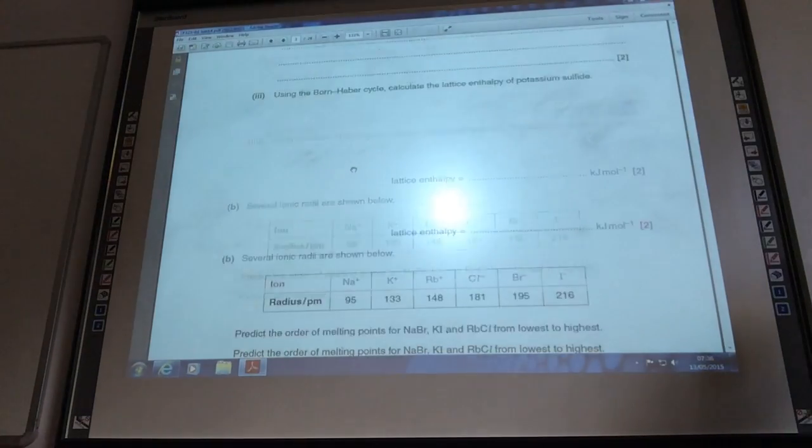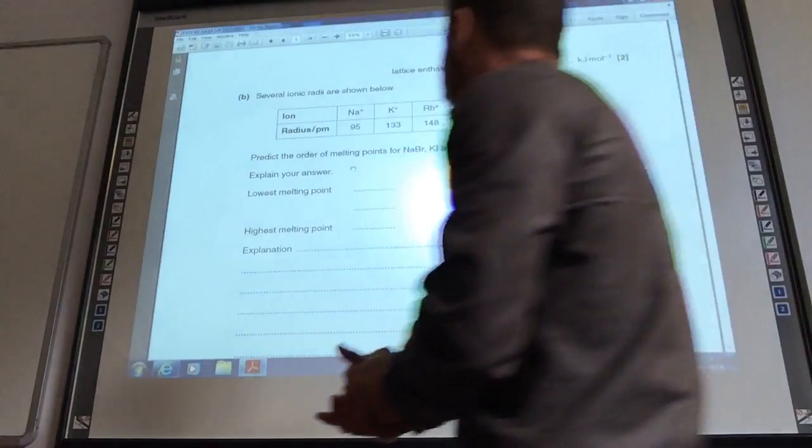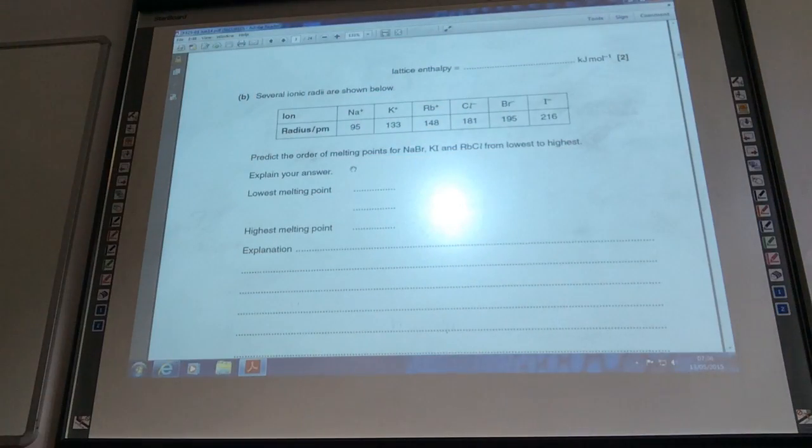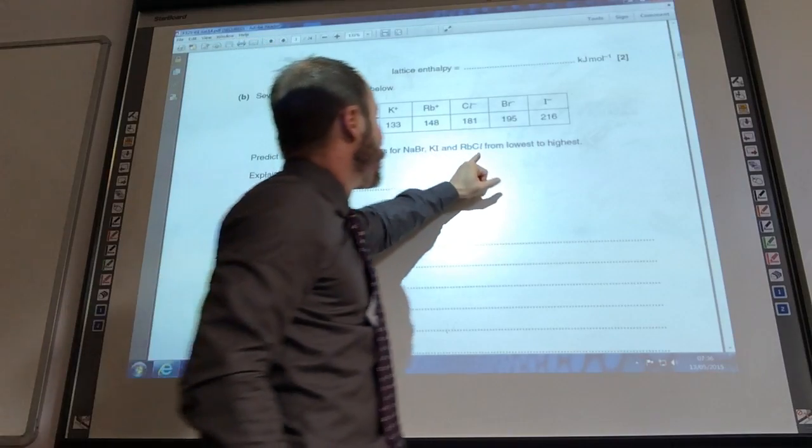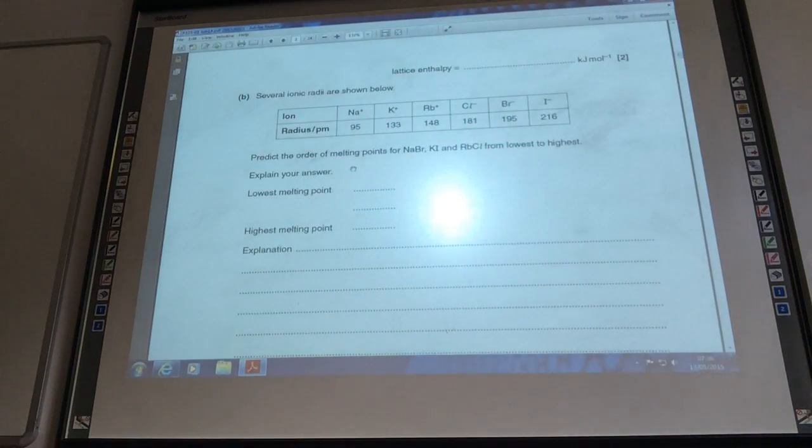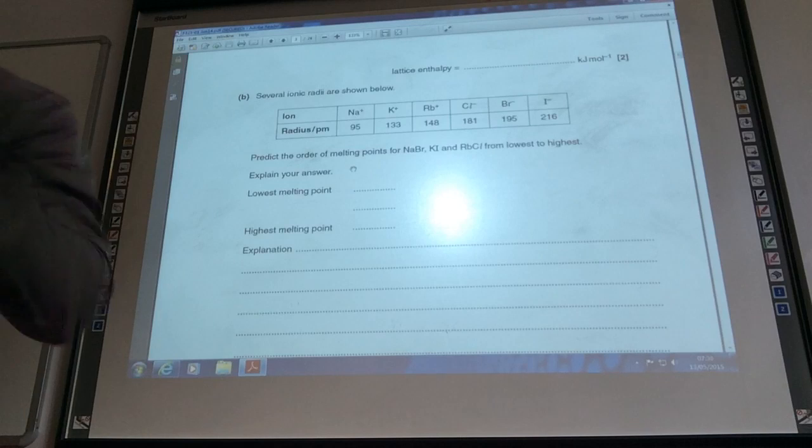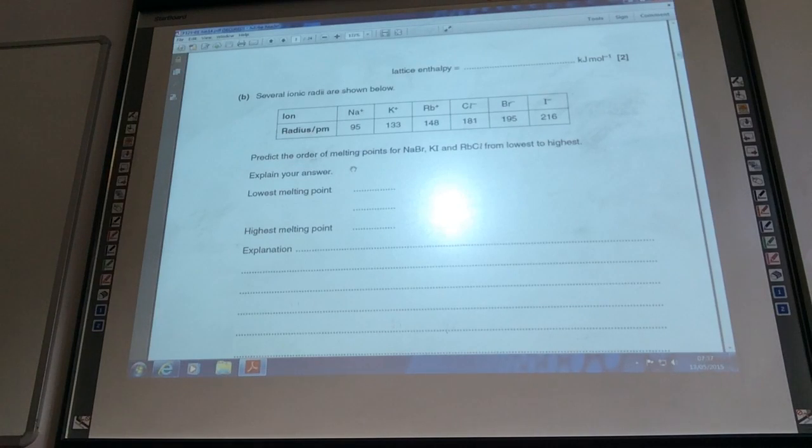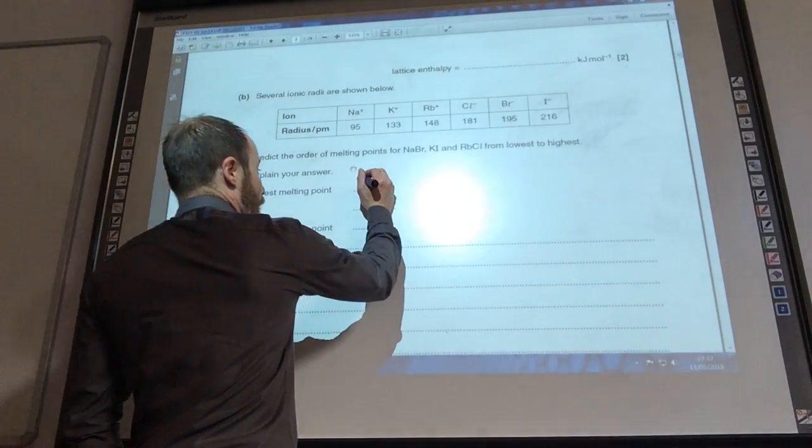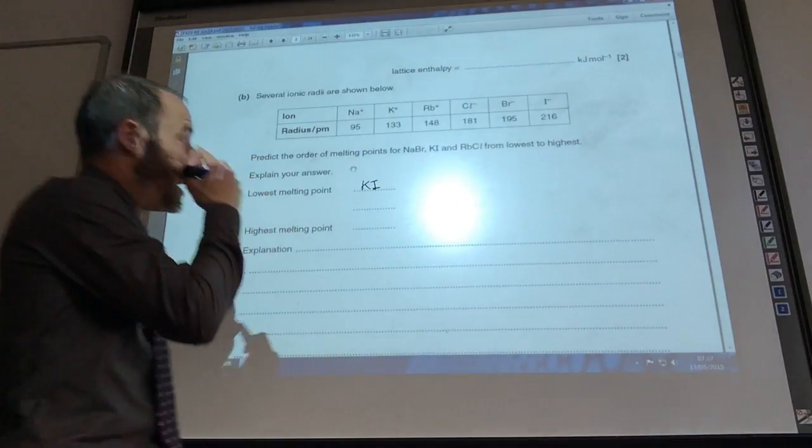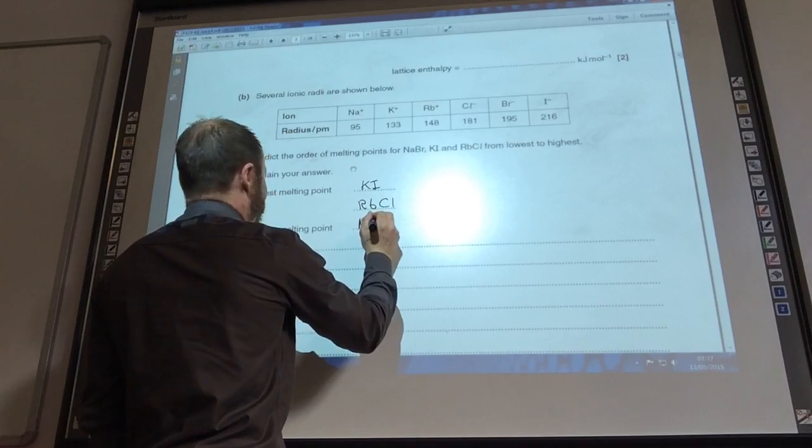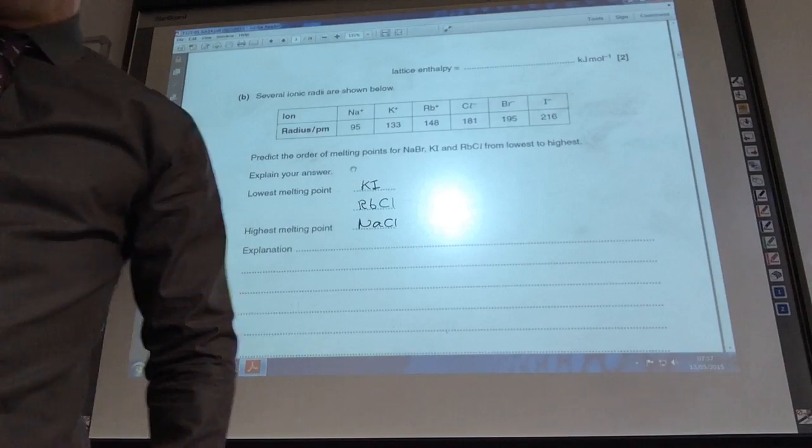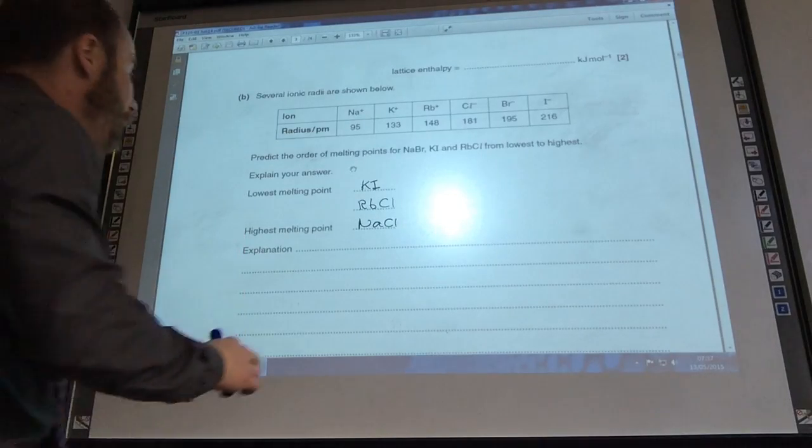Okay, we've now got some ionic radii here and it wants us to predict the order of melting points for potassium bromide, potassium iodide and rubidium chloride. Notice these are all group 1, so they've all got a plus charge. These are all group 7, so they're all going to have a minus charge. And I've got to predict it from the lowest melting point to the highest. So the one which is going to have the lowest melting point is going to be potassium iodide. Your next one is going to be rubidium chloride, and then finally the highest melting point is going to be sodium chloride.